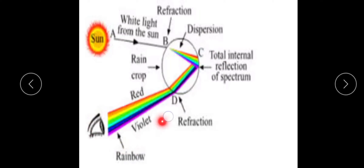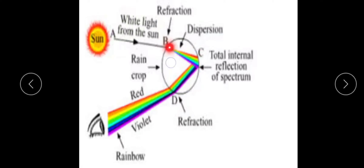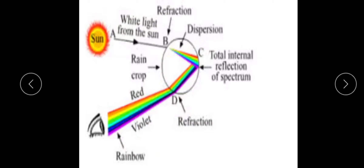These three effects - dispersion, refraction, and total internal reflection - are all present in the rainbow. Due to these three effects, rainbow is formed. A rainbow is a spectrum of sunlight in nature. Once the ray of light is incident on a spherical water droplet, refraction and dispersion take place, then the light is totally reflected back. Now, what is the condition to observe the rainbow?